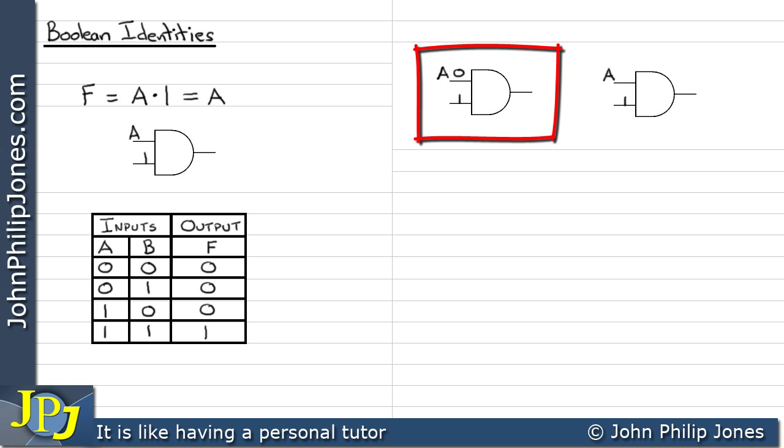And, of course, a 0 and a 1 has to be a 0, because you have to have two 1s present at the input of a two-input AND gate to have a 1 at the output. And on this one here, we can have A being 1. And, of course, 1 and 1 is 1, so we have a 1 at the output.